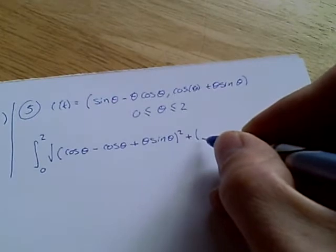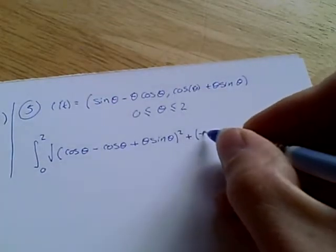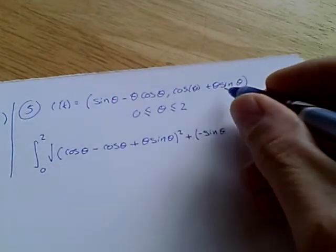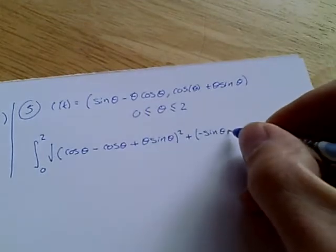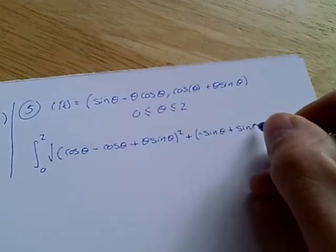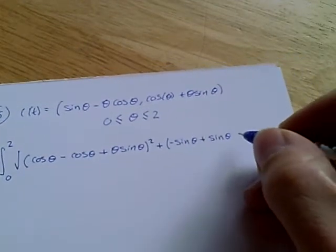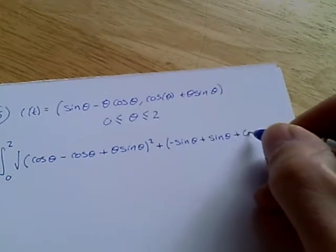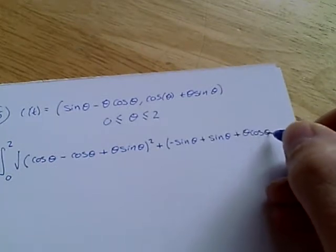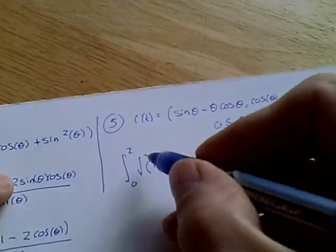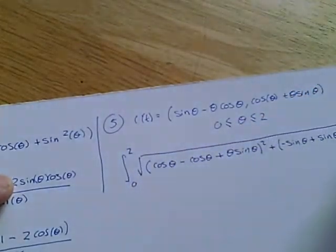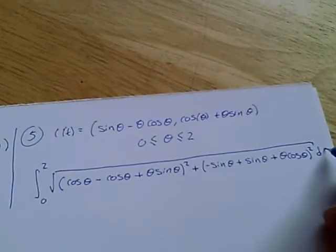And then, plus the square of y dot. So that would be minus sine. And then, in the product rule, plus sine, plus θ, cosine, squared. And then, big square root, d θ.